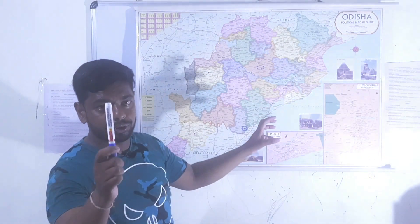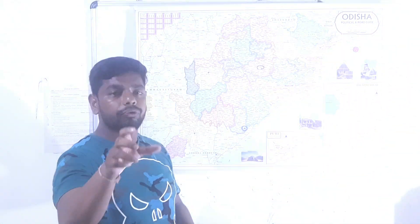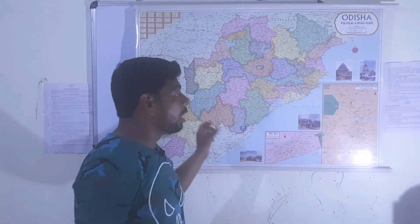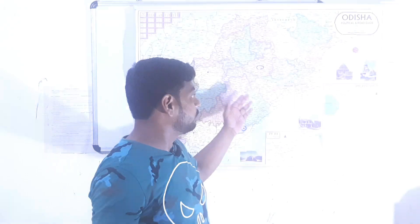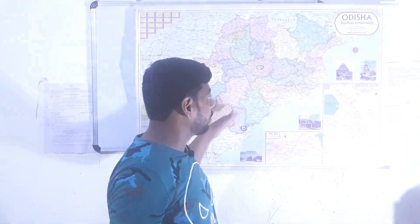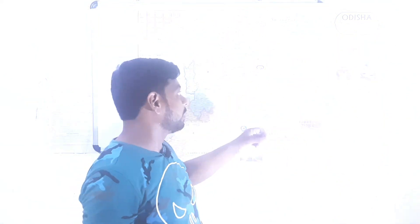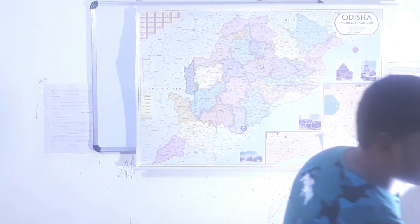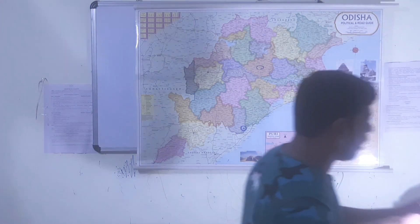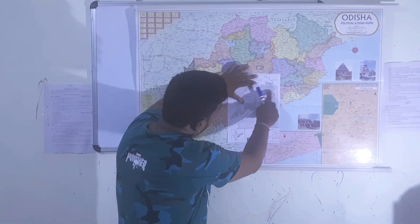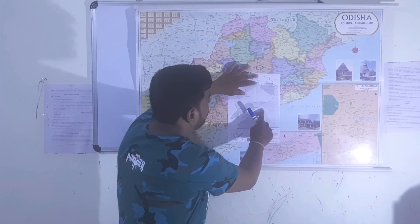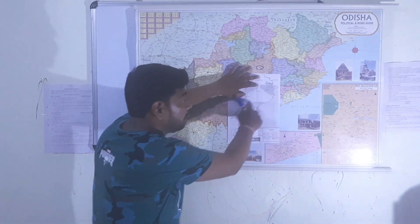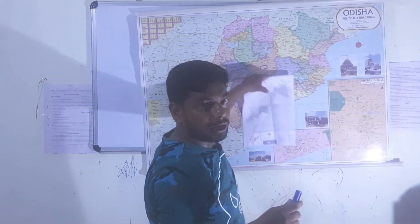Odisha is entirely divided into five physiographic divisions. We were discussing the Odisha coastal plain, which is 480 kilometers long and 10 to 18 kilometers wide, also called the gift of six rivers. To remember the six rivers: Subarnarekha, then 1 and 3B — Budha Balanga, Baitarani, and Brahmani — followed by Mahanadi and Rusikulia. The largest catchment basin in Odisha is Mahanadi, and the second largest river basin is Brahmani.